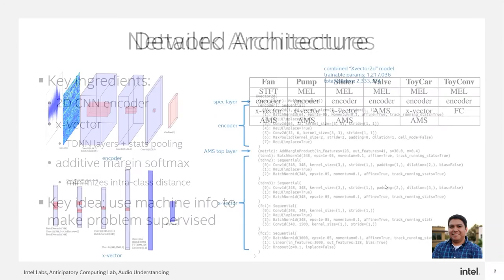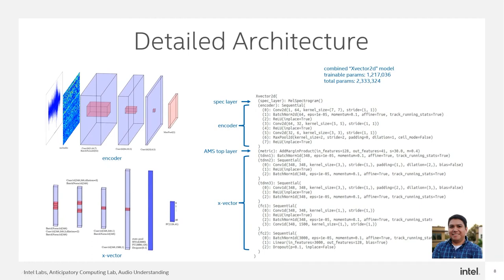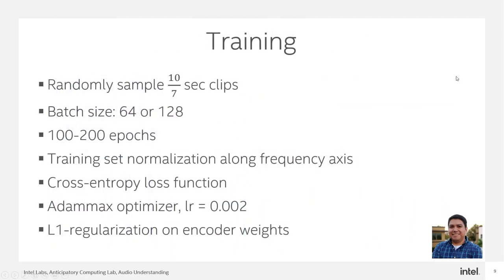Here we see a detailed view of our architecture. A PyTorch printout shows that our input layer is a spectrogram layer, which feeds into an encoder and then an X-vector part. We then cap it off with an additive margin softmax layer. The combined model is not very large — it only has 1.2 million trainable parameters. During training we randomly sample about a 1.4-second sound clip to form batches of either 64 or 128. We train for between 100 and 200 epochs, apply training set normalization, use cross-entropy loss, and use the AdaMax optimizer with the default learning rate. We also use L1 regularization on the encoder weights to prevent overfitting.